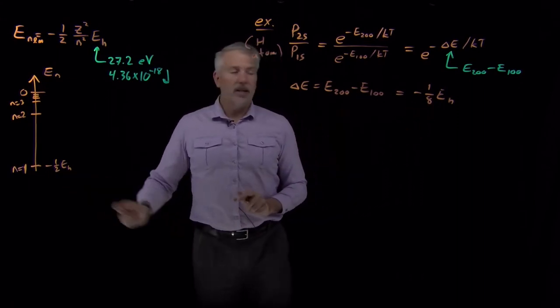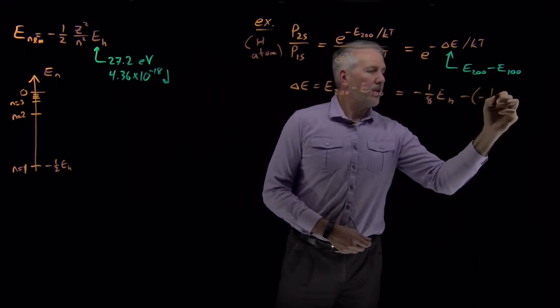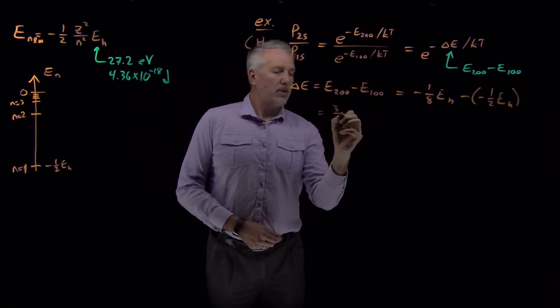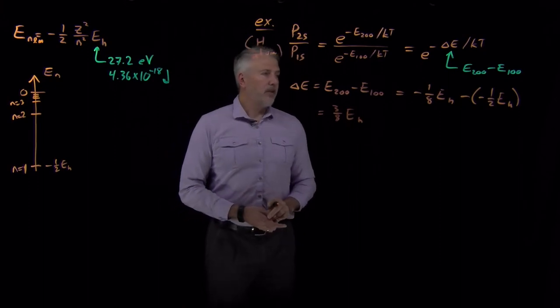So altogether, that adds up to positive 3/8 of a Hartree, negative 1/8 plus 1/2.